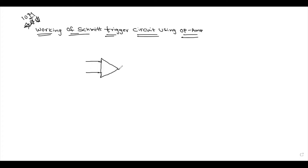First of all, the symbol of the operational amplifier. The op-amp has two inputs: the inverting and the non-inverting inputs. We will draw these along with the output terminal V0.